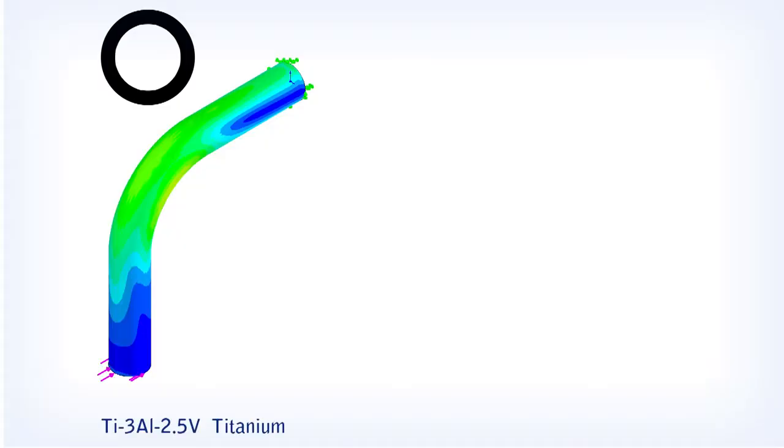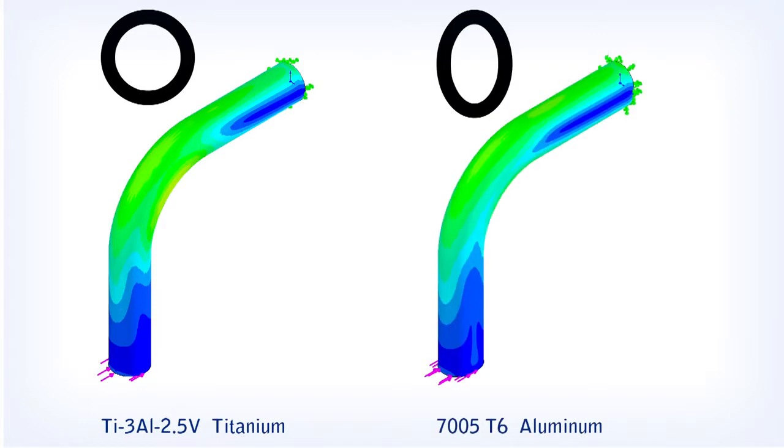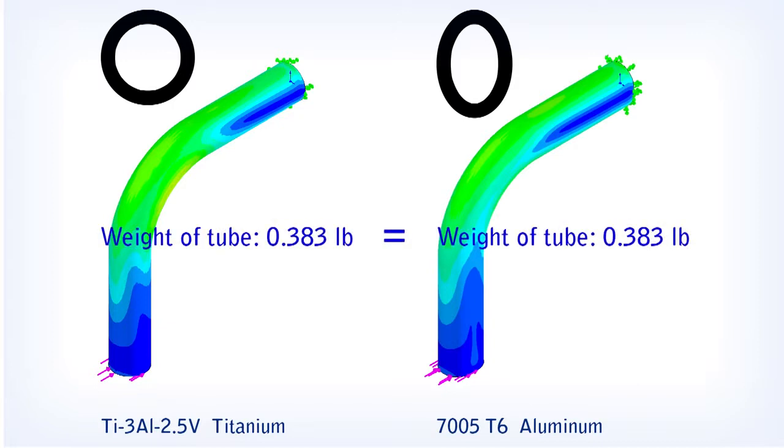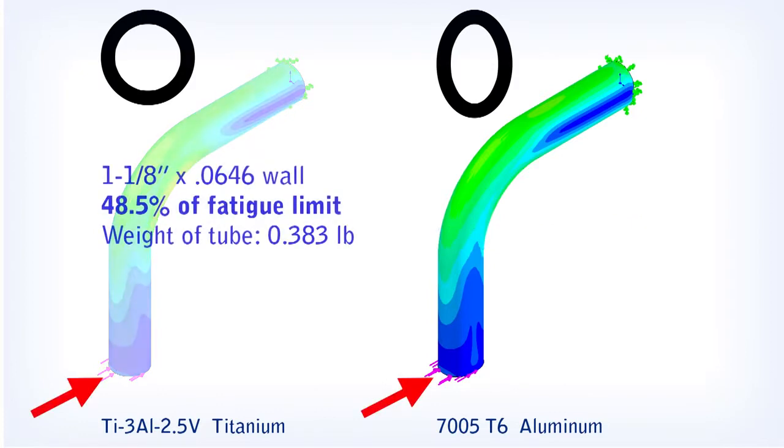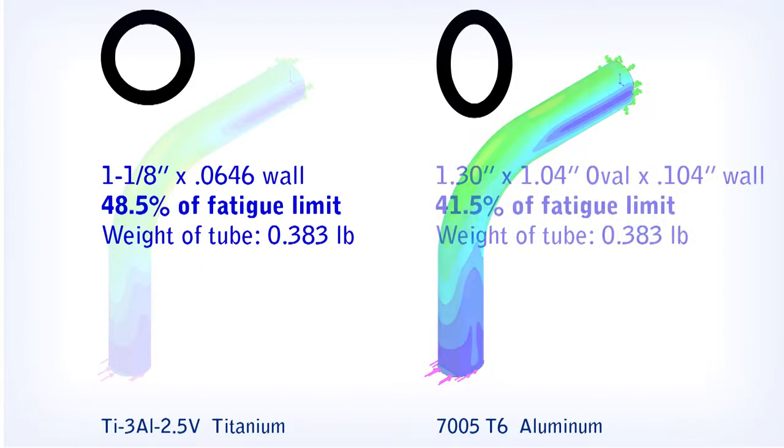On the left, we have a section of round titanium tubing. On the right, we have a section of oval 7000 series aluminum tubing. Both sections have identical weight. If we apply a 100-pound force to the base of each tube, the titanium tube will reach 48.5% of its fatigue limit. The aluminum tube will only reach 41.5% of its fatigue limit.